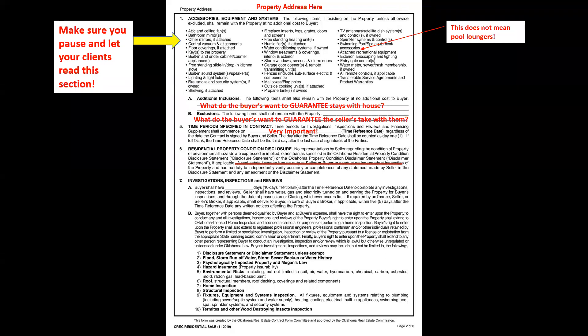Paragraph six covers property disclosures — your client has looked at, reviewed, accepted, and signed them. A real estate licensee has no duty to conduct an independent inspection of the property and will not be reviewing its accuracy. Make sure your buyers understand you hold a real estate license, not x-ray vision — they need to hire a licensed and bonded home inspector to find issues not visible on a simple walkthrough.